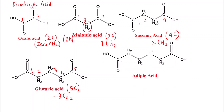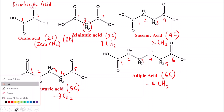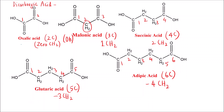Adipic acid has six carbons and four CH₂ groups. 'A' stands for adipic acid in the mnemonic. Now, why is it important to remember the names of these dicarboxylic acids?